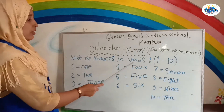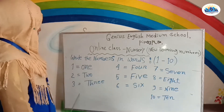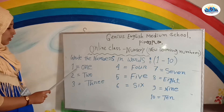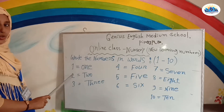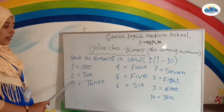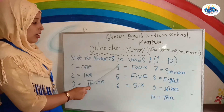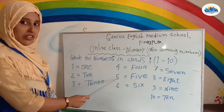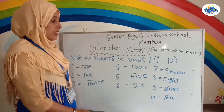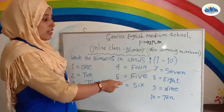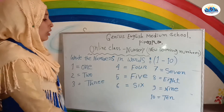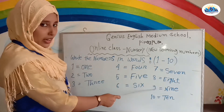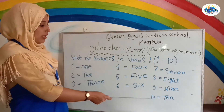Write the numbers in words. This is number 1. This is number 2. This is number 3. This is number 4. This is number 5. This is number 6. This is number 7. This is number 8. This is number 9. This is number 10.